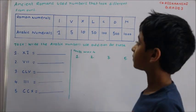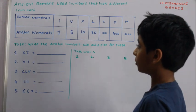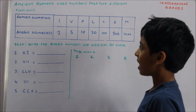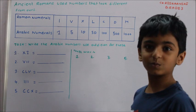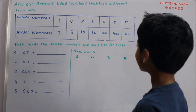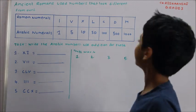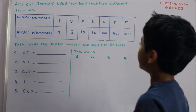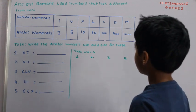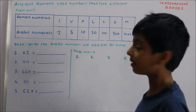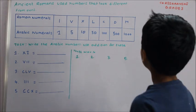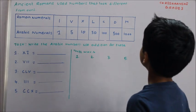Let's read the chart. Roman numerals are special numerals. I means 1, V means 5, X means 10, L means 50, C means 100, D means 500, M means 1000.